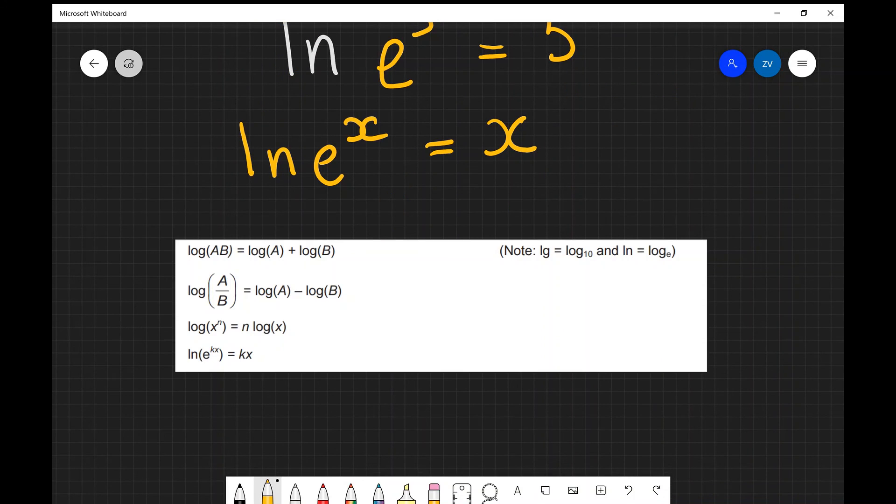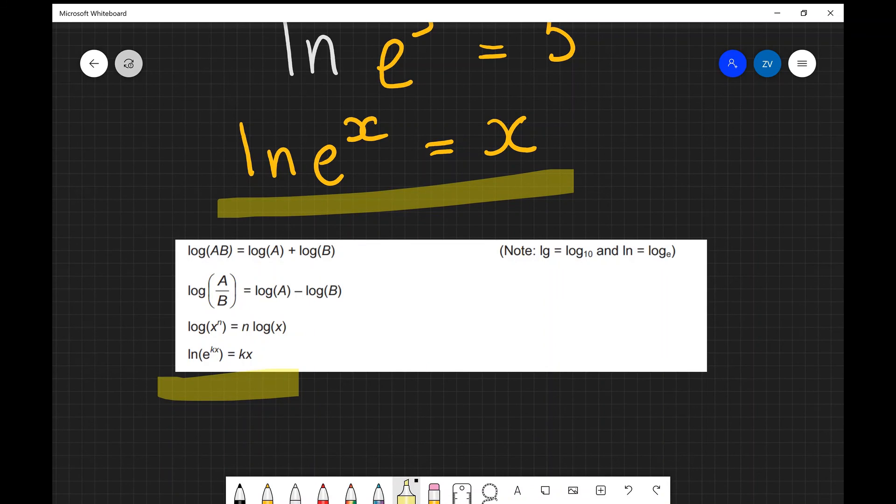Luckily for us we're actually given this rule in our formula booklet as you can see over here and they've even added another constant k. So if you have e to the power of kx, what you're going to get if you take the natural log of this is kx.